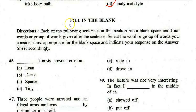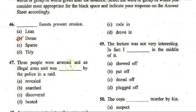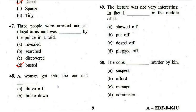The last section in English is Fill in the Blank. First: 'Dash forests prevent erosion.' The correct answer is B — 'dense.' Dense forests prevent erosion. Next: 'Three people were arrested and an illegal arms unit was dashed by the police in a raid.' The correct answer is D — 'busted.' Next: 'A woman got into the car and dashed.' The correct answer is 'drove off.'